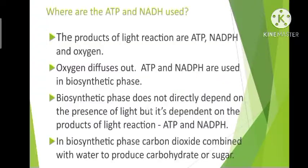During the light reaction, the products ATP, NADPH, and oxygen are produced. Oxygen, being a gas, diffuses out of the chloroplast and is released into the atmosphere through the stomata. ATP and NADPH are used in the biosynthetic phase of photosynthesis.